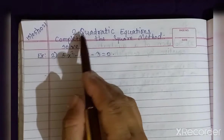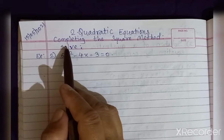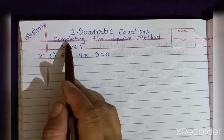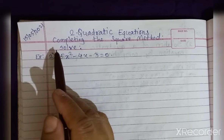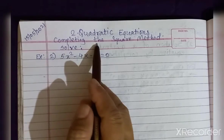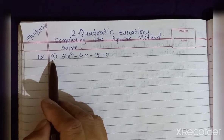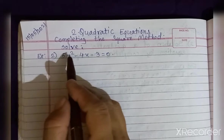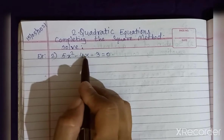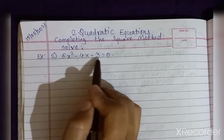Hello students, chapter 2nd: quadratic equations. In the last video we studied how to find the roots of a quadratic equation by the completing the square method. Now this is the second example from our textbook: 5x² minus 4x minus 3 is equal to 0.